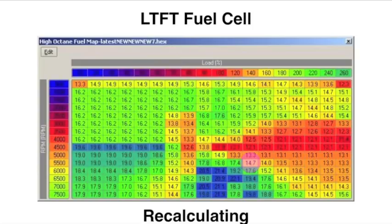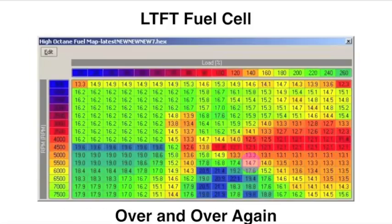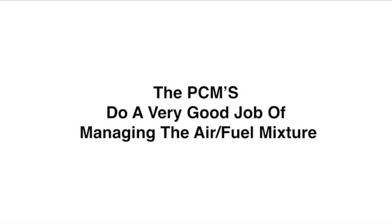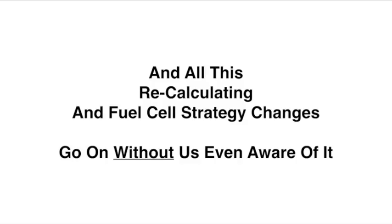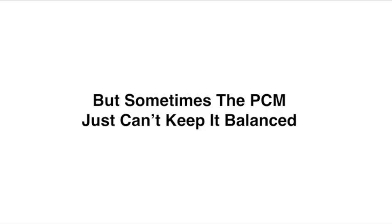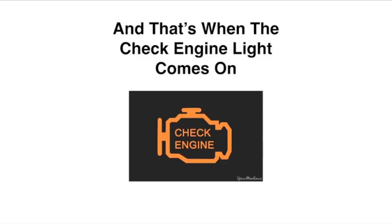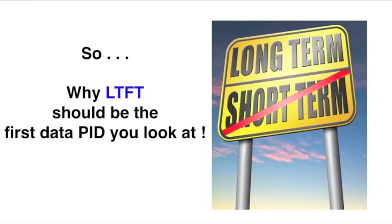It's recalculating and changing the strategy over and over again, as long as the engine is running. Now, the PCMs do a very good job of managing the air-fuel mixture. And all of this recalculating and fuel cell strategy changes goes on and on without us even being aware of it, usually. But, sometimes, the PCM just can't keep it balanced. And that's when the check engine light comes on, making us aware.